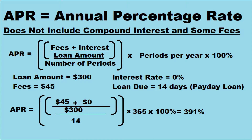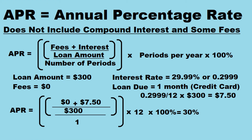Most payday loans will not advertise that your APR is 391%. They'll just say it's a $45 fee — they don't want to draw your attention to how ridiculously high this APR is. When you compare that to a credit card, a penalty interest rate on a credit card is 29.99%, basically 30%.